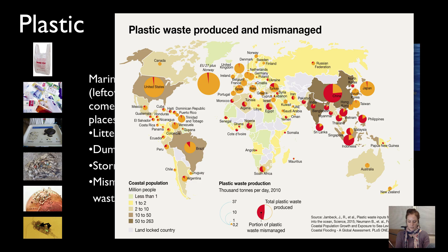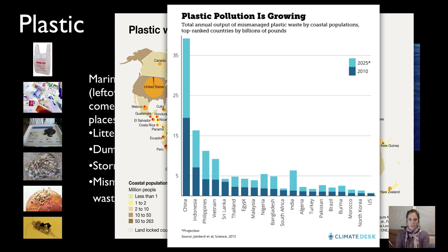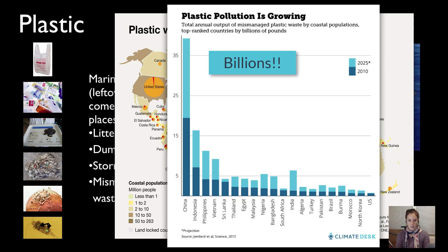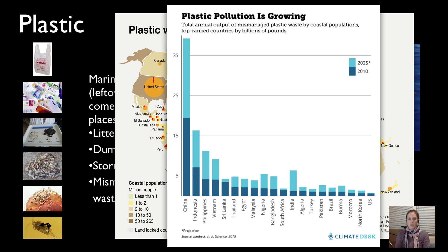This graph is from the same study, published in 2015. The dark blue represents 2010 data, and the lighter blue is a projection for 2025, showing the top 20 countries ranked by billions of pounds of mismanaged waste ending up in the oceans. At the far left, China had about 20 billion pounds of mismanaged plastic dumped into the ocean around 2010. At the far right, the US had about one to one-and-a-half billion pounds — not as much as China, but still a staggering amount.